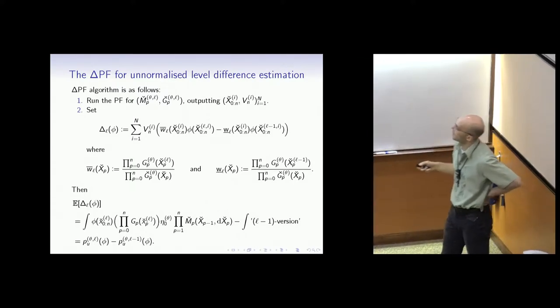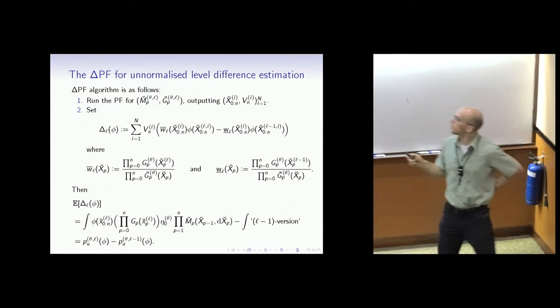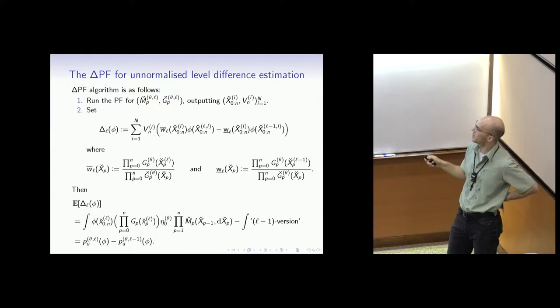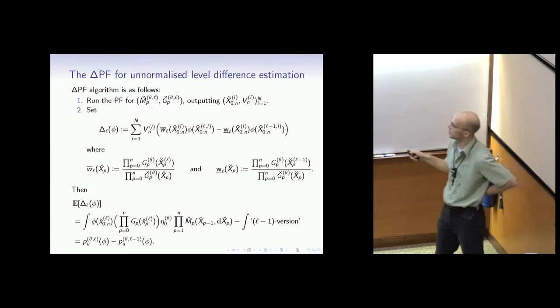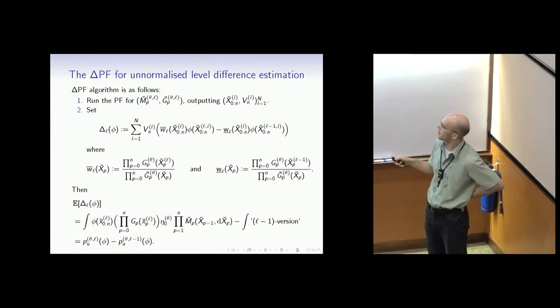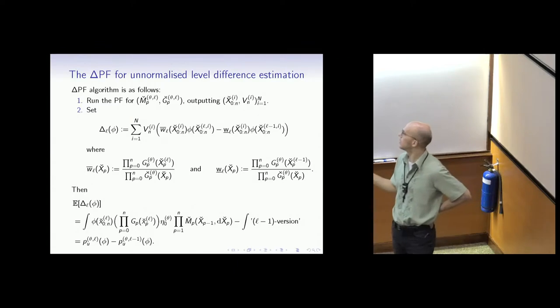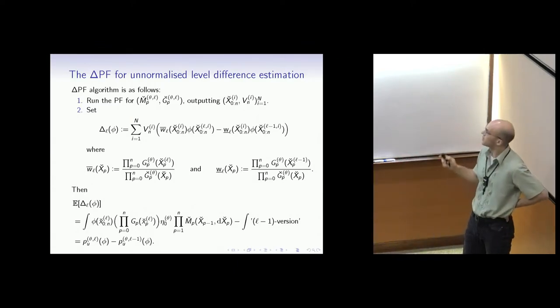If you take the expectation with respect to this estimator, you obtain - if you write out the law of the Feynman-Kac model and take the expectation, these cancel. You're left with the L level here and the coupled transition. If we integrate out over the L minus one level, we're left with just the L transition. The same is the case for the L minus one level. We were able to estimate unbiasedly this increment.